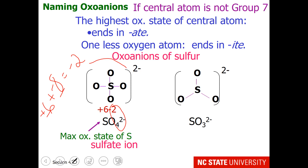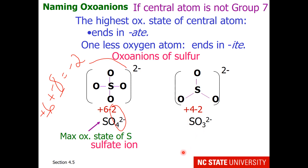Looking at the other ion, we go from 4 oxygens to 3 oxygens, so the oxidation state changes by 2. Working the math, sulfur's oxidation state is +4, not +6 — that is the maximum oxidation state minus 2. It has one less oxygen, so it ends in '-ite' and we call this the sulfite ion.